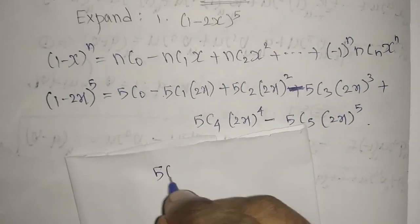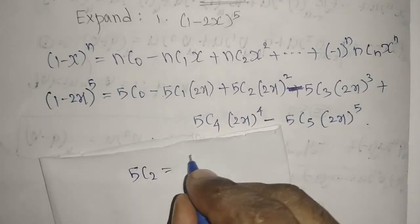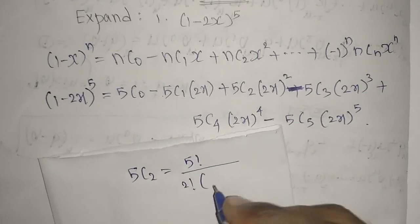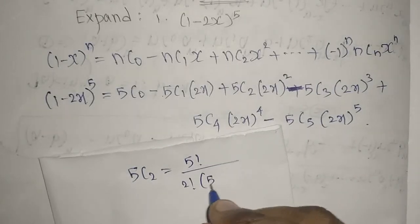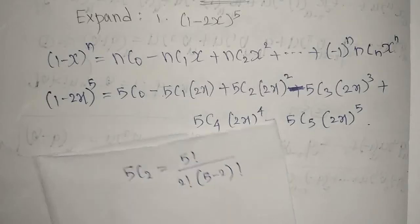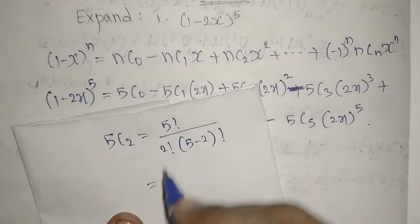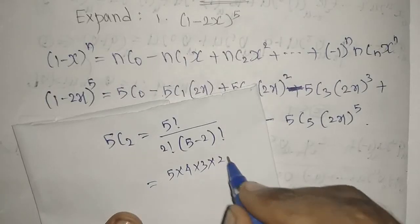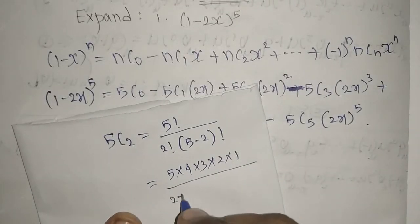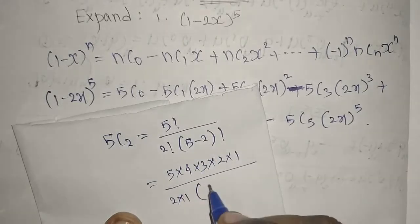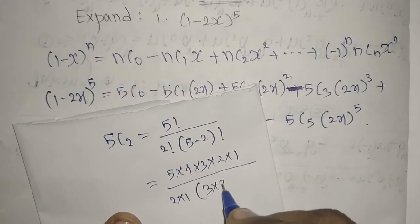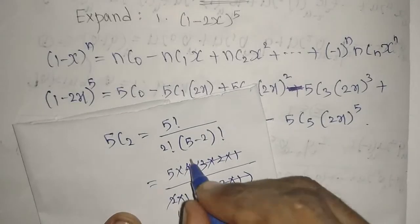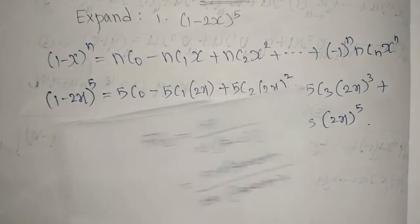For 5C2: applying the formula, it is 5 factorial divided by 2 factorial times (5 minus 2) factorial, which is 3 factorial. So: 5×4×3×2×1 divided by (2×1)×(3×2×1). The 3×2×1 cancels, leaving 5×4 divided by 2, which gives 10.